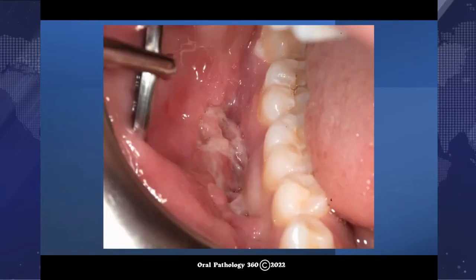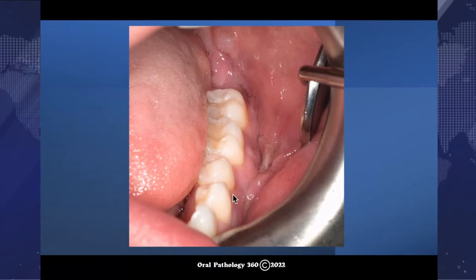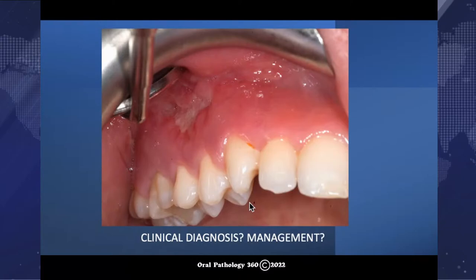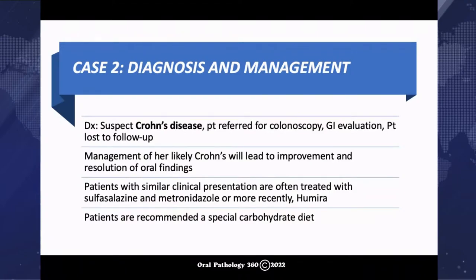Intraorally, in the right mandibular vestibule, there is a linear ulcer with rolled, elevated hyperplastic margins. A similar finding is on the left mandibular vestibule. On the right maxillary vestibule, there is also some ulceration. With all of those findings — the cobblestoning, firm enlargement of the lip, and linear ulcers in the vestibules — we highly suspected Crohn's disease. The patient was having severe GI issues. We referred her for colonoscopy and GI evaluation, but unfortunately the patient was lost to follow-up before we got a definitive diagnosis.